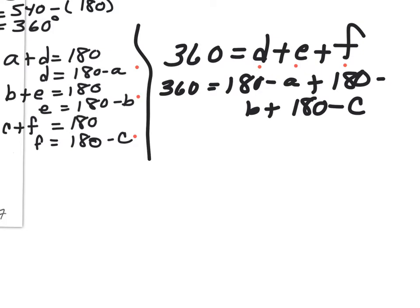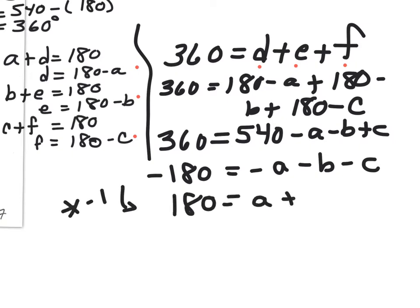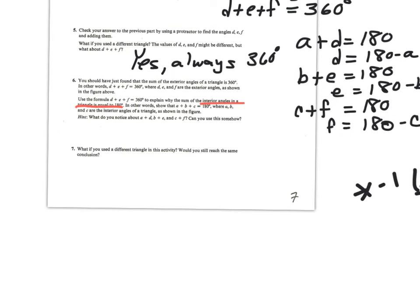We have 360 on the left, and on the right 180 times 3 is 540, minus a minus b minus c. Subtracting 540 from both sides gives negative 180 equals negative a minus b minus c. Multiplying everything by negative one gives 180 degrees equals a plus b plus c, and we're done. You can go both ways: start with the exterior angles sum to find interior angles, or vice versa — connecting back to high school algebra.